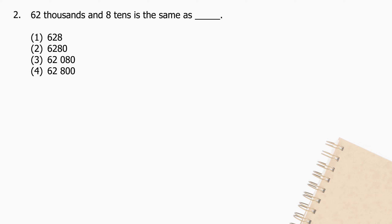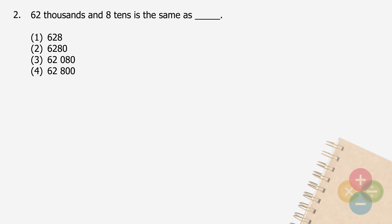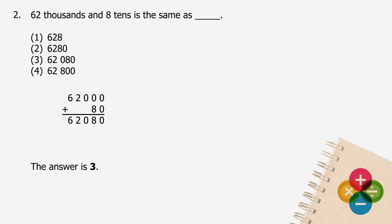Question 2: 62 thousands and 8 tens is the same as 62,080. The answer is 3.